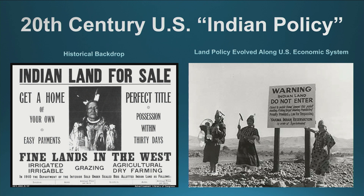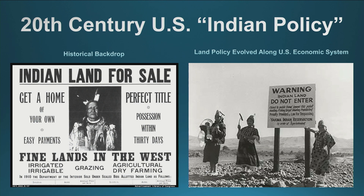Land policy evolved along the expansion of the U.S. economic system. I want to use the next slide to identify three broad categories to encompass economic growth. Between 1700 to 1815, that period in U.S. history, we see small-scale agricultural production and merchant capital expansion occur.